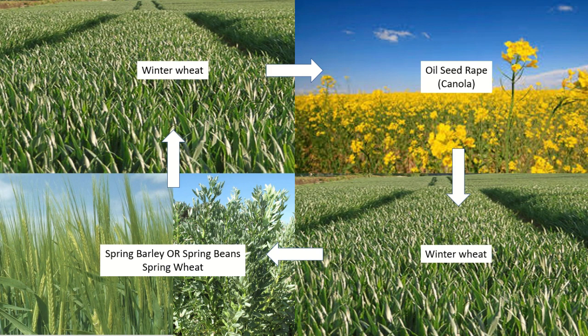However, you can't grow continuous wheat because of a root pathogen called take-all. That's a major consideration when you're having straw crops following each other. So our second stage in the rotation is oilseed rape or canola, which is our next most profitable crop.